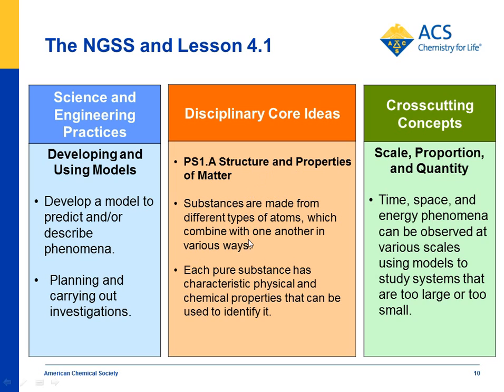Under disciplinary core ideas, substances are made from different types of atoms, and each pure substance has characteristic physical or chemical properties. Eventually you can get to these ideas in the rest of Chapter 4, but Lesson 4.1 is pretty foundational. For scale, proportion, and quantity, the idea is that you can describe a macroscopic phenomenon like static electricity by using a submicroscopic scale all the way down to the protons and electrons that make up the atoms — operating on two different scales.